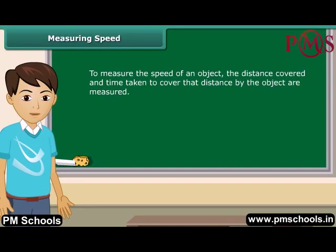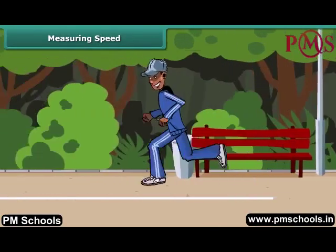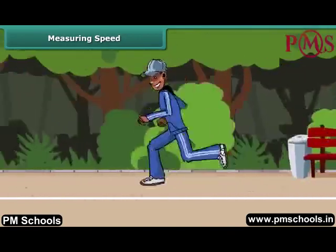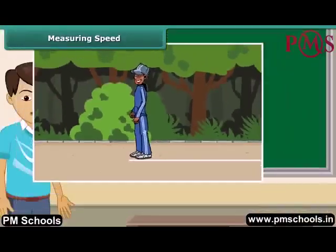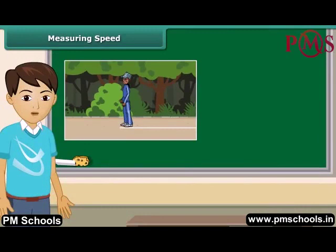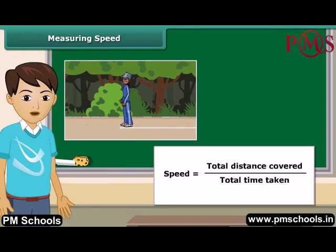To measure the speed of an object, we measure the distance covered and the time taken to cover that distance, then we apply the formula of speed. Draw a line and ask a friend to stand on it. Allow him to run until he wants to stop. Note the total time taken from the moment he started to the moment he stopped. Measure the distance covered by your friend, then divide the distance by the time taken. What you have calculated is the running speed of your friend.